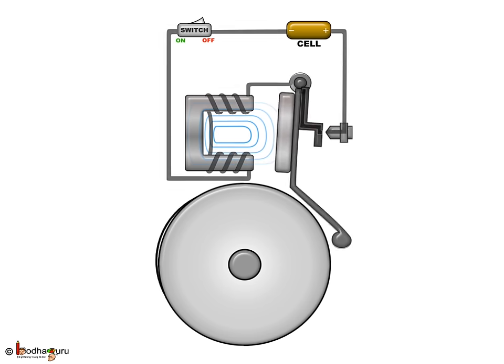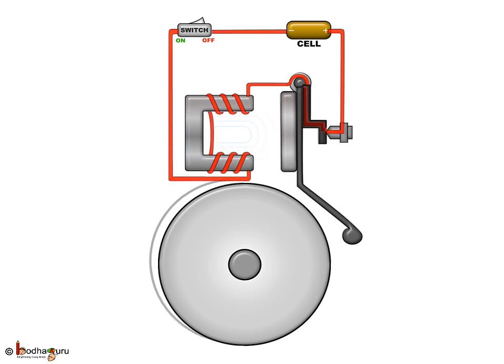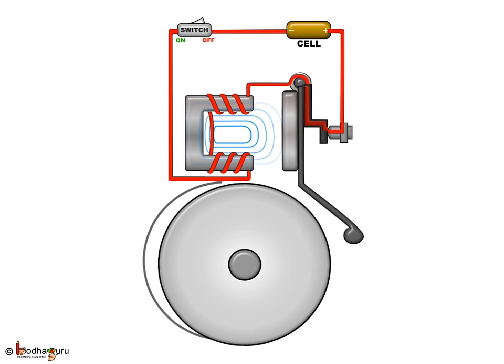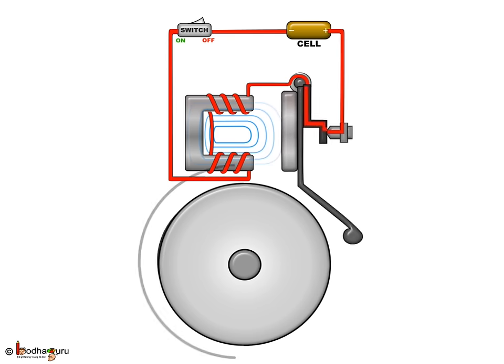But, it also broke the circuit and stopped the current flow. Due to this, the electromagnet lost its magnetic power and the clapper went back to its original position, making their contact with the screw again. This made the circuit complete and again the clapper struck the gong.